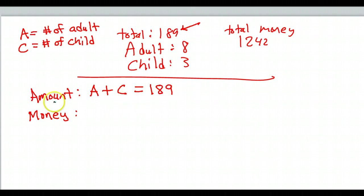I'm hoping you said A plus C equals 189. The quantity equation, the how many equation, the amount equation is usually really simple like that. A is the number of adult, C is the number of child tickets, the total number of tickets is 189. So, it makes sense that A plus C should equal 189.